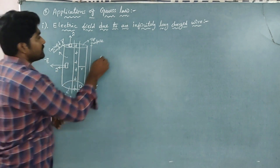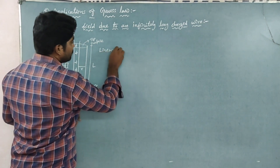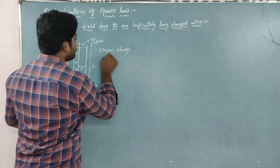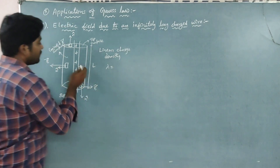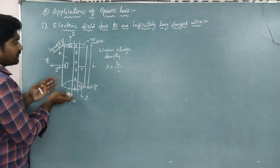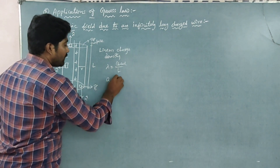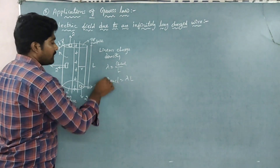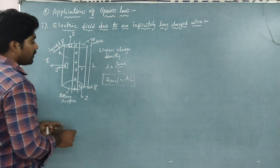Now, charge density — linear charge density. Linear charge density is denoted by lambda, and it is equal to charge per unit length L. This is the basic definition.